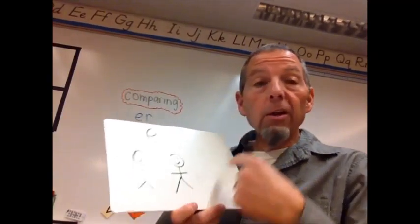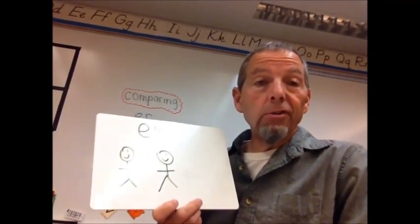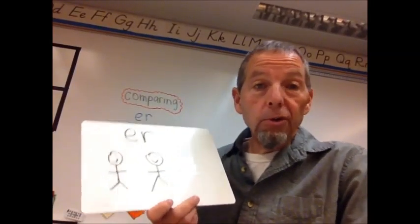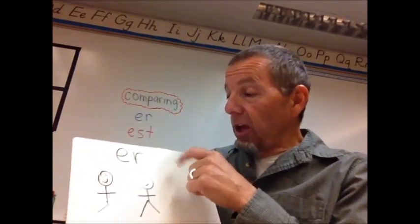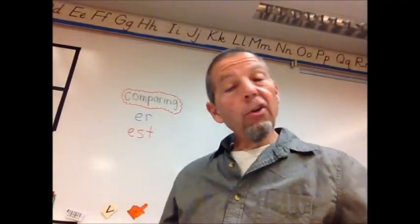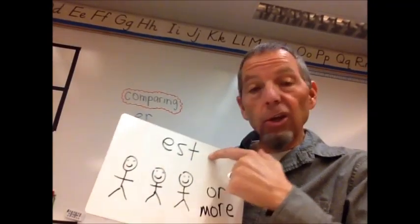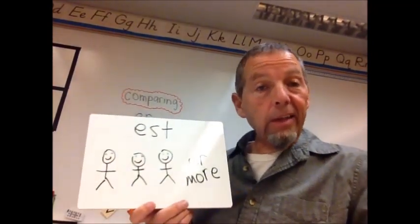Quickly, if you're going to compare two things, two pizzas or two people or two cars or two football teams, you got to use ER at the end of the word. If you're going to compare three things, you got to use EST at the end of the word.